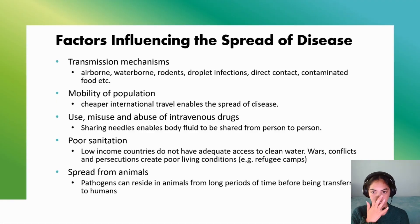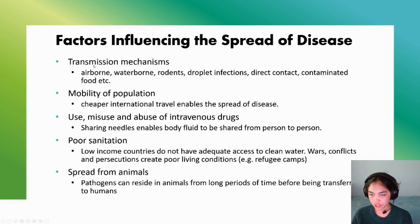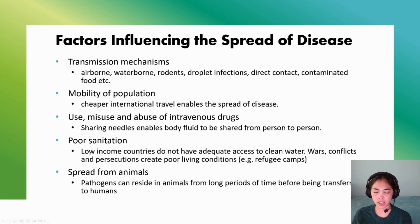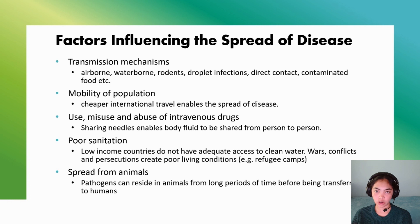There are different factors that influence the spread of disease beyond the pathogen itself, including transmission mechanisms — whether airborne, waterborne, spread by rodents, or via droplet infection. The mobility of the population also matters, as cheaper international travel enables disease spread, as seen with COVID-19. The use and misuse of intravenous drugs is another factor, particularly relevant to HIV and AIDS. Poor sanitation exacerbated the Black Death and remains a problem in developing countries where clean water and sewage systems may not exist, leaving people prone to drinking contaminated water containing pathogens.